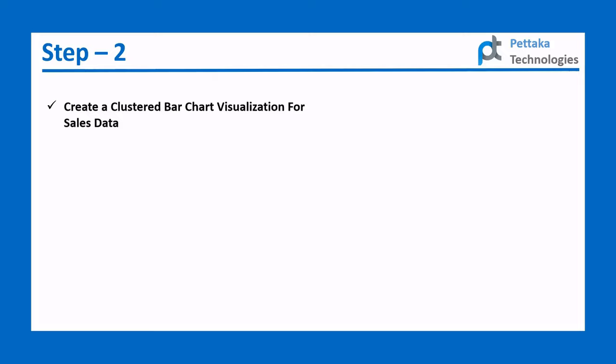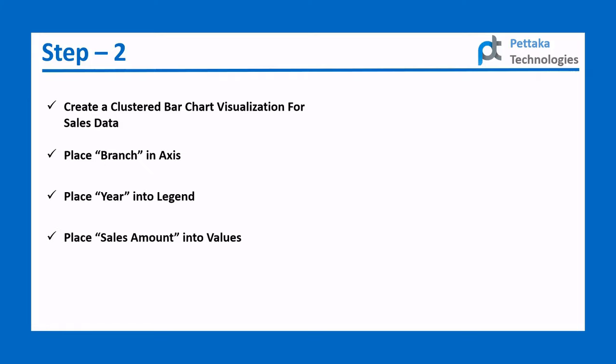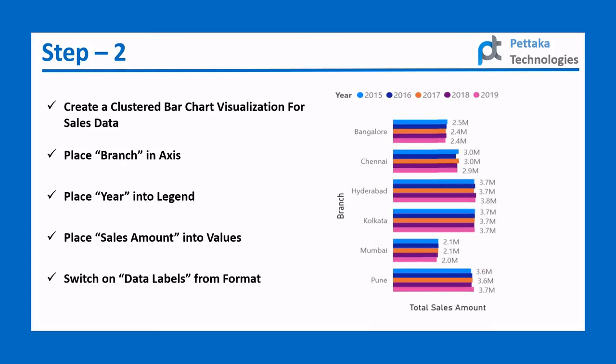In Step 2, create a clustered bar chart visualization for the sales data. Place Branch in Axis, Year in Legend, and Sales Amount in Values. Switch on Data Labels from the Format pane. The final output will look like this.